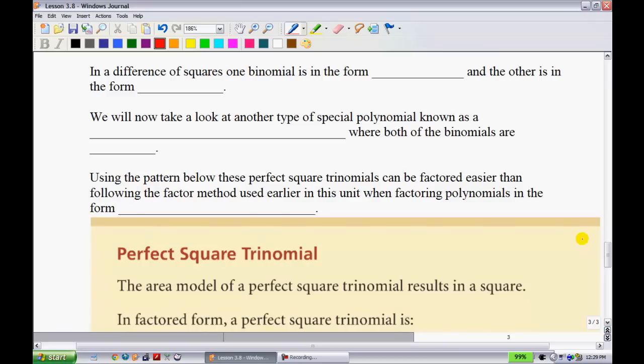So the second type is going to be a perfect square trinomial. In a difference of squares, one binomial is in the form a-b, and we figured out that the other one is in the form of a+b. We'll now take a look at another type of special polynomial known as a perfect square trinomial. So this time we actually have three terms, where both of the binomials are the same.